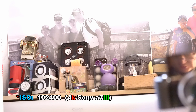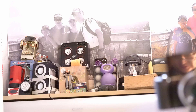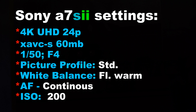Compare that to the a7s II 4K and see what you think. I'd suggest you open two windows and go to different timelines to compare the a7s II to the a7 III — that way you can adjust the video size. Now we're doing the 4K test on the Sony a7s II. Settings: XAVC 4K, 24 frames per second, 60 megabits, shutter speed 1/50th, aperture f4, ISO 200, standard picture profile, fluorescent warm, AF continuous.